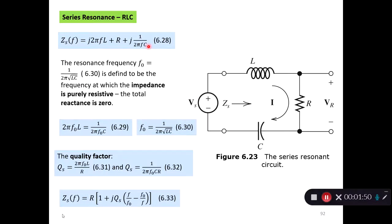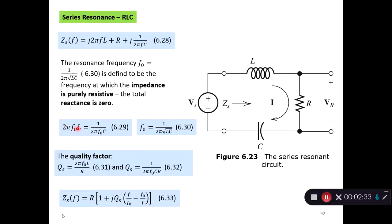We have an expression called the resonance frequency, F0. It's defined by 1 over 2π times the square root of the inductor and capacitor values. It's defined as the frequency at which the impedance is purely resistive — the total reactance is zero. Reactance is the impedance of the inductor and capacitor, which are purely imaginary due to J. So 2π·F0·L equals 1 over 2π·F0·C.